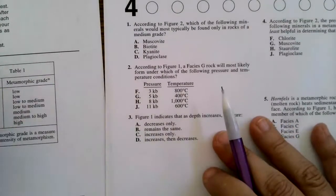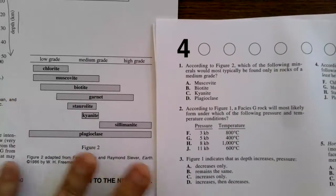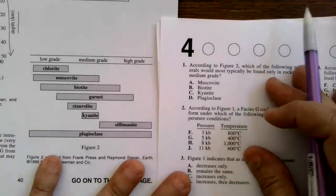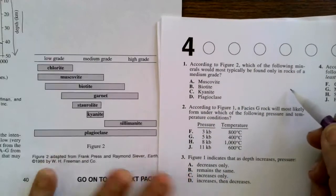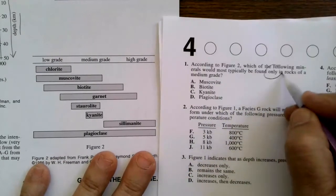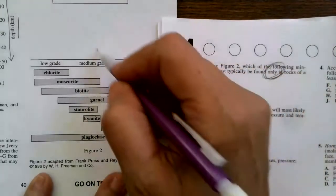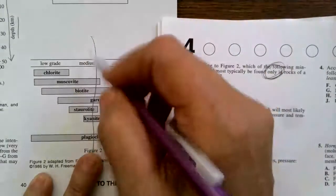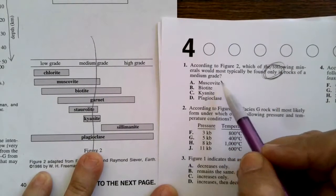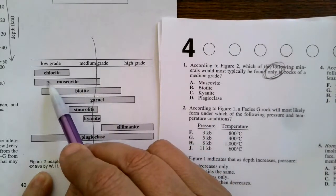According to figure two, and that's this one right here, which of the following minerals would most typically be found only in rocks of a medium grade? So when I see the word 'only,' I need to zero in on that. Only in rocks of a medium grade, so I'm looking for something that's only in the middle.